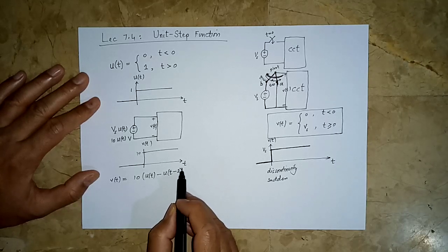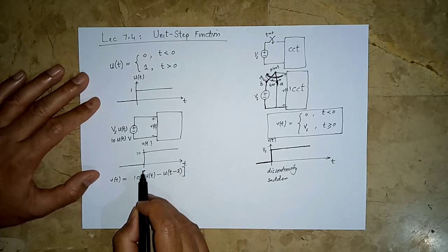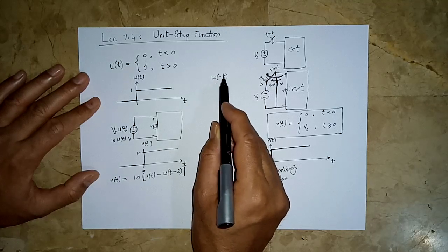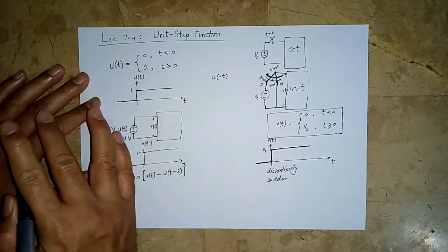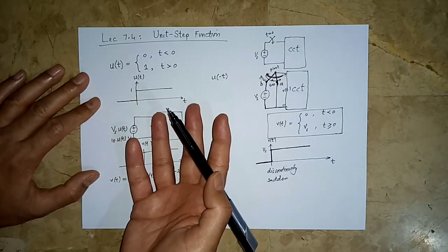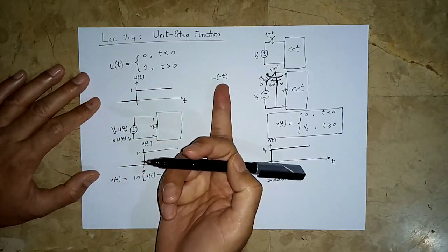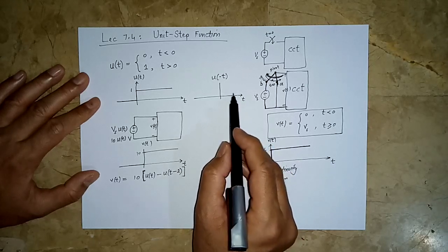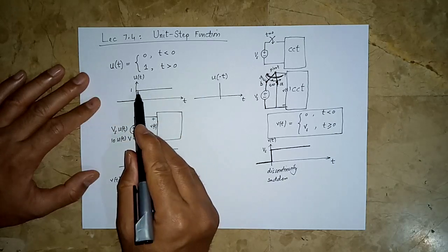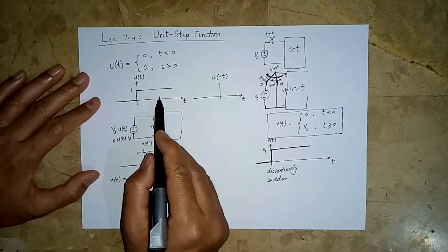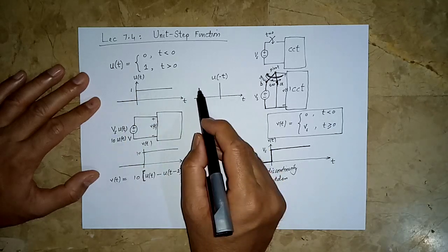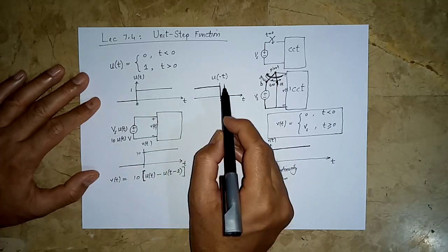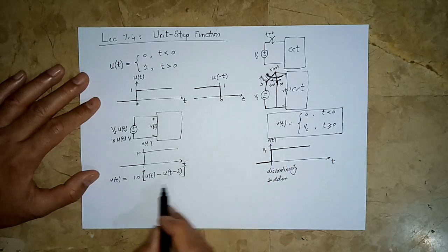If u(t) is our standard step function, what would u(-t) be? That means we have flipped the time axis — the positive axis goes to the other side. Whatever the function does at positive time will now be done at negative time. So u(-t) is one before zero and zero after zero.